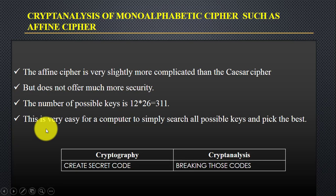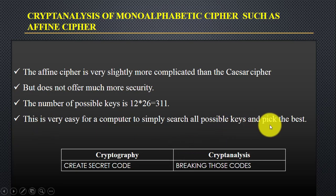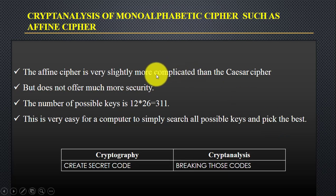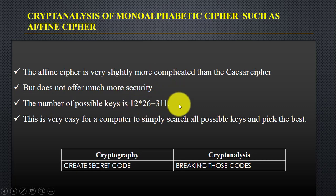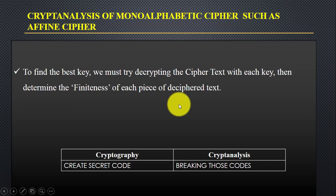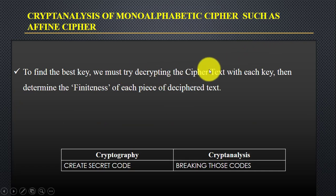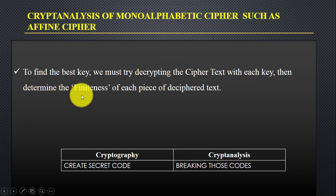An attacker can easily search for all the keys and pick the best among all — that's why it does not offer more security. The number of possible keys is 312. The attacker finds the best key by decrypting the cipher text with each key, then determining the fitness of each piece of the deciphered text.